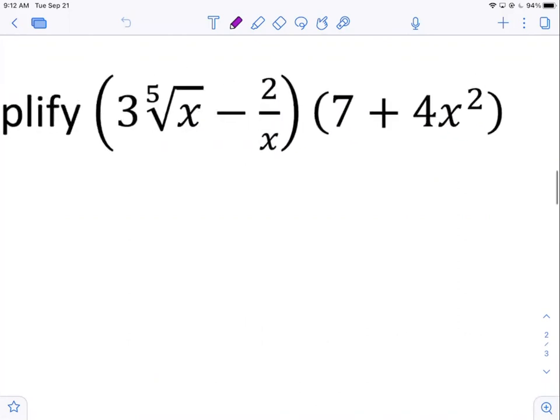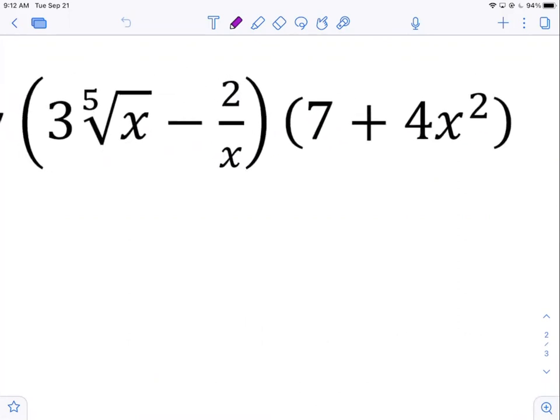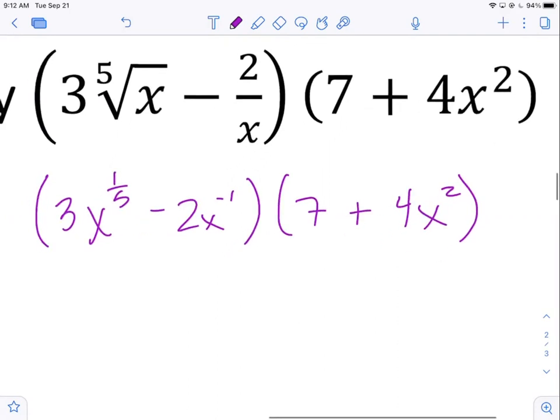Expand and simplify. The easiest way to expand something like this, it's not just a polynomial times a polynomial, is to rewrite everything that has a radical or denominator variable as an exponent. So that's what I'm going to do first. This becomes three times x to the one-fifth minus two x to the negative first. And then the second factor is both fine and dandy. So that would be my first step.